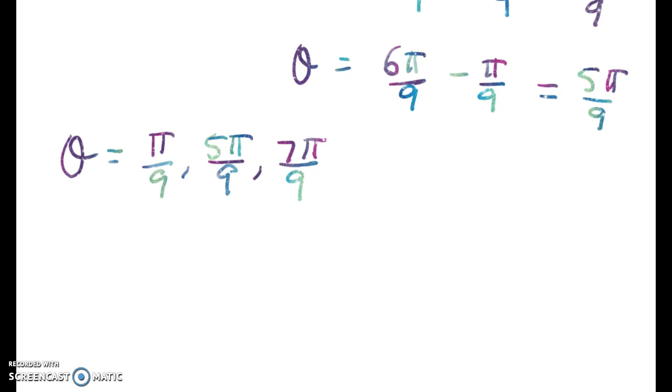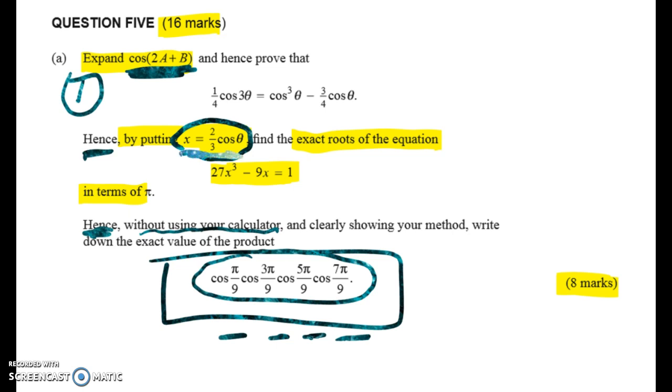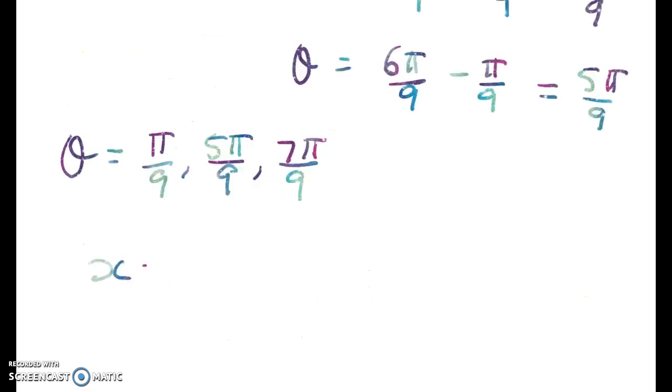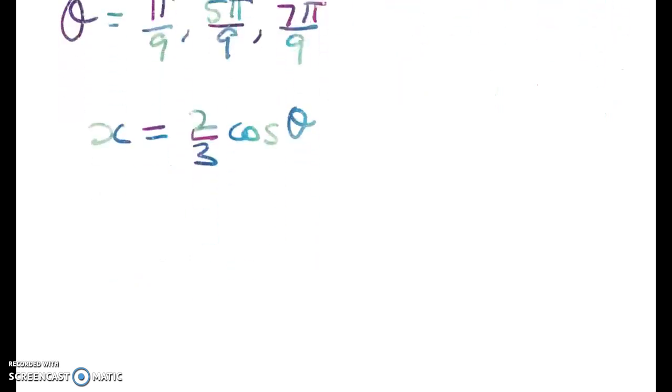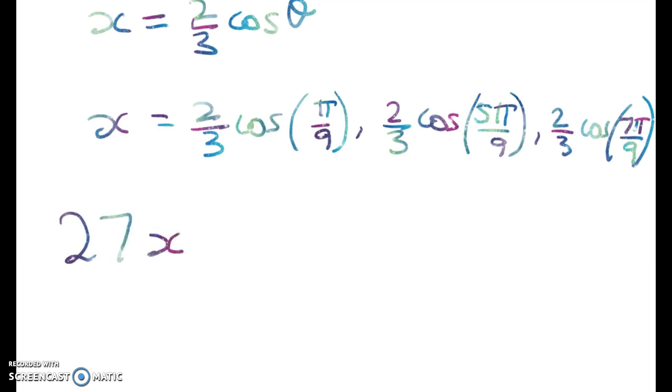But our goal was to solve the equation. So if we go right back to the question, remember we've made that substitution, but our point is to find the roots of this equation in terms of pi. So what we need to do now is to say, well, hang on, what was x? x was 2 thirds cos theta. So my three values of x are going to be x is equal to 2 thirds cos of pi on 9, 2 thirds cos of 5 pi on 9, and 2 thirds cos of 7 pi on 9. So these are the roots for this equation: 27x cubed minus 9x equals 1.